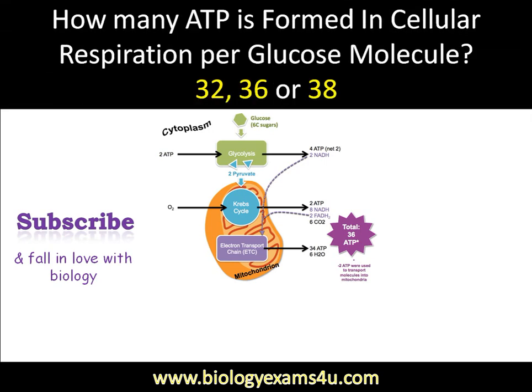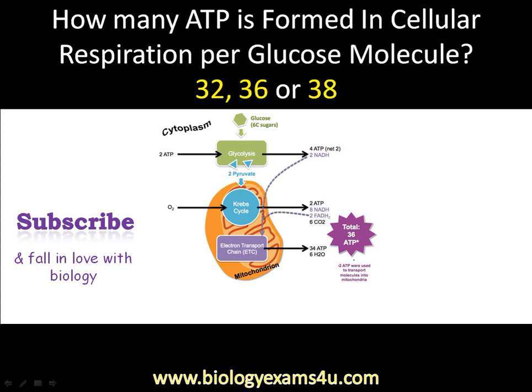Hi friends, today we are going to discuss a very interesting topic: how many ATP is formed in cellular respiration per glucose molecule. We often get 32, 36, or 38 as answers. I searched a lot to find out how we reach this calculation, so let us discuss that in detail.